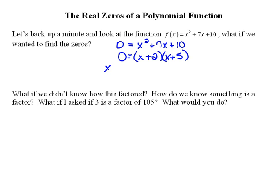So then we would set each one of the factors equal to zero and solve for our x-intercepts, or our roots. So we would have x-intercepts at negative 2 and an x-intercept where x is negative 5.